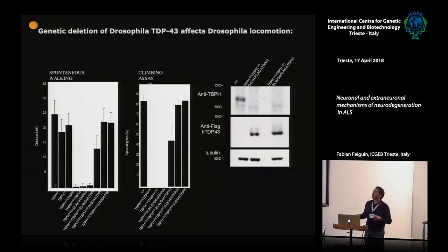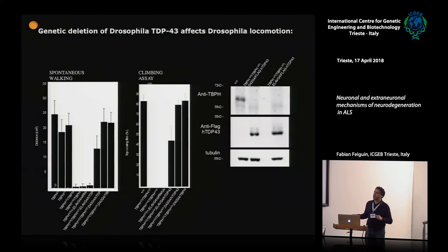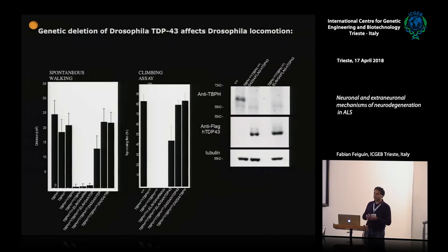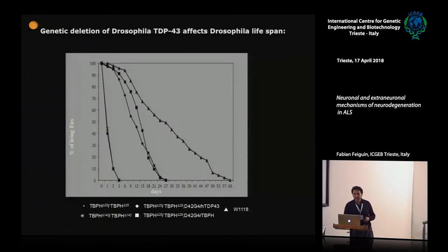These phenotypes were quantified. These are wild type and these are mutant — in walking assays they are not able to perform. When you rescue either with the wild type endogenous protein or the human protein in different cell populations, they can recover both walking activities and climbing activity. They cannot climb or move without rescue — this validates the genetics.